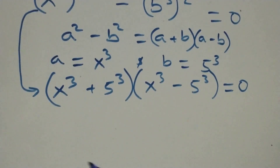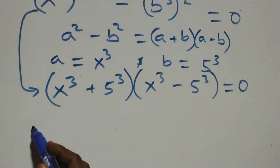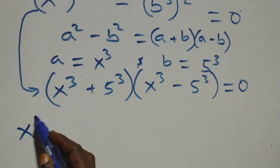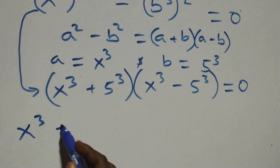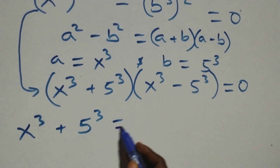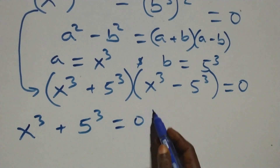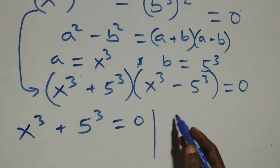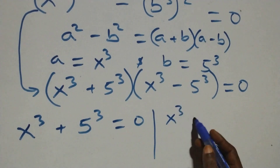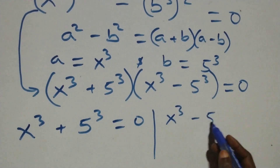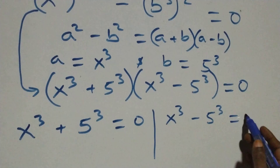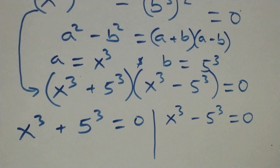So what we have becomes: x raised to power 3 plus 5 raised to power 3, times x raised to power 3 minus 5 raised to power 3, equals to 0. Then we have two possible cases: the first one, x raised to power 3 plus 5 raised to power 3 equals to 0, or x raised to power 3 minus 5 raised to power 3 equals to 0.